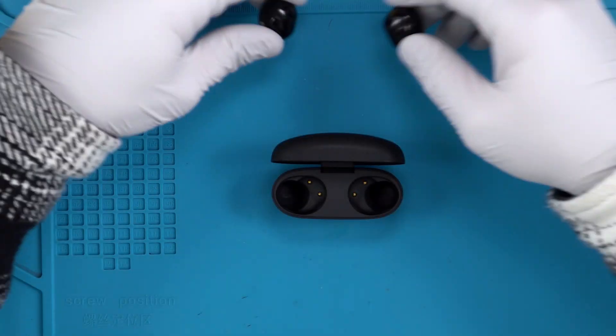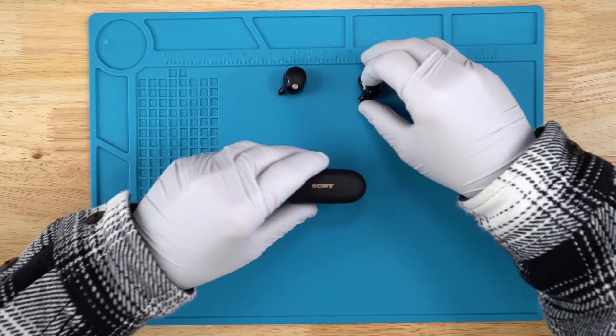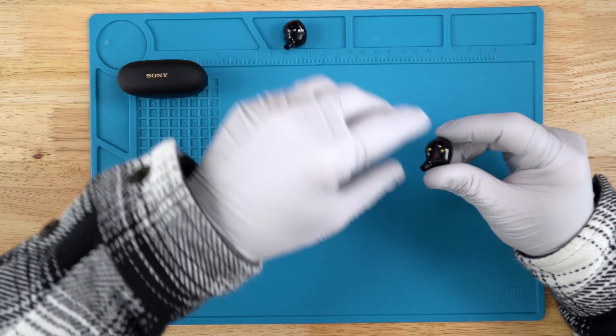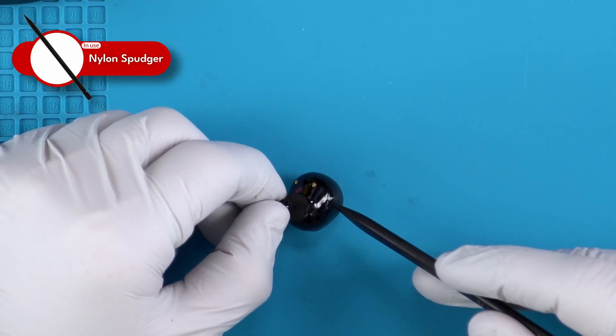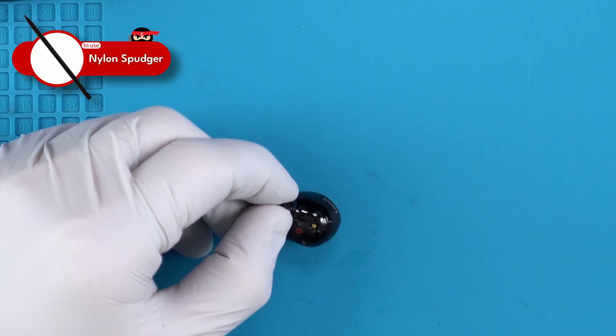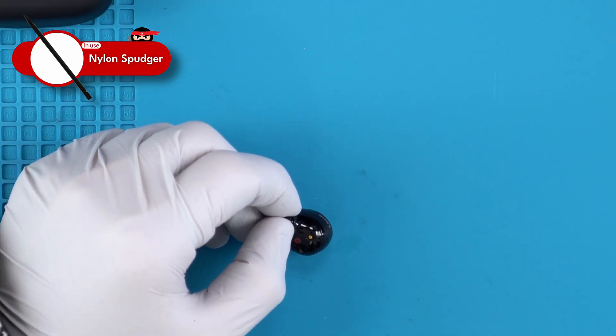All right, we'll jump right into it and go ahead and pull out both buds here. We'll start with the right bud, so I'll go ahead and start heating up around here right at that connection point. I'll be using roughly 170 degrees Celsius at a low airflow.